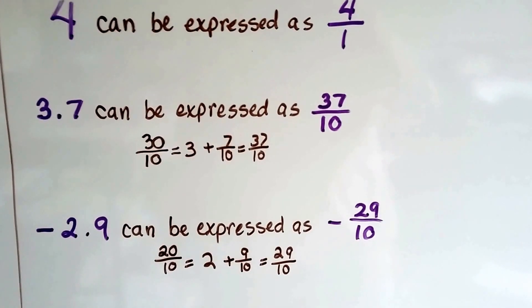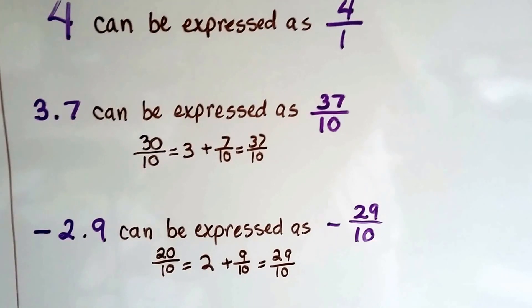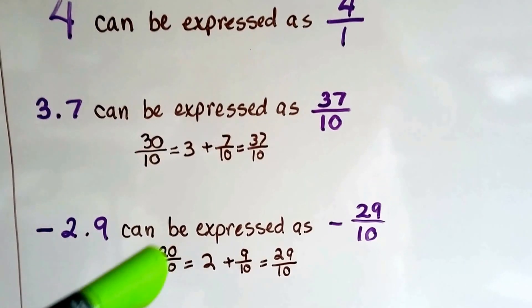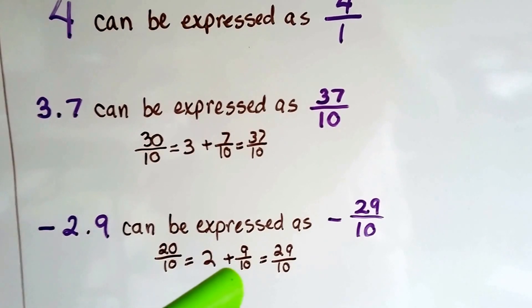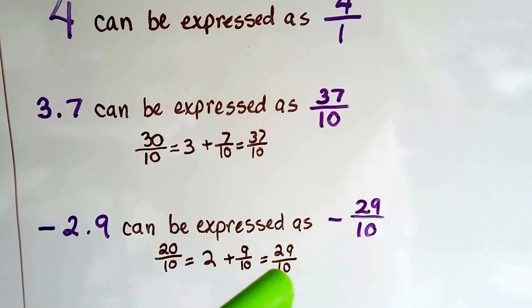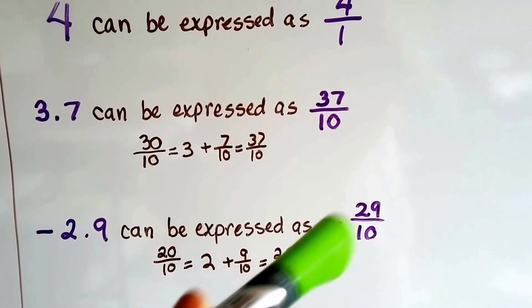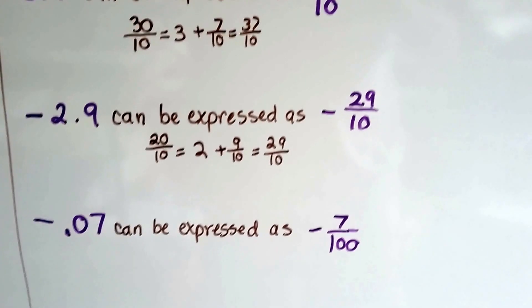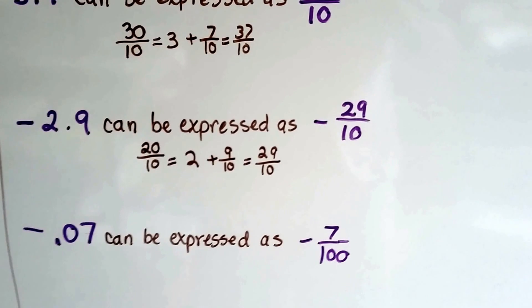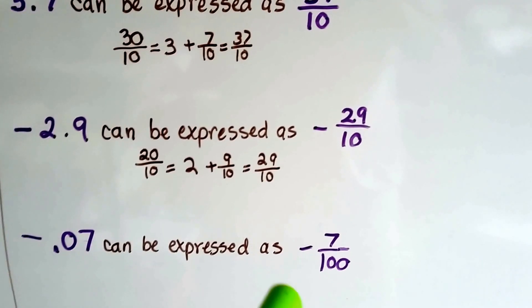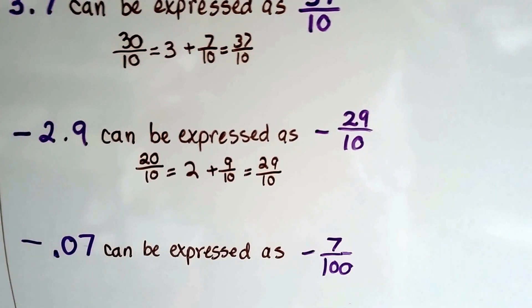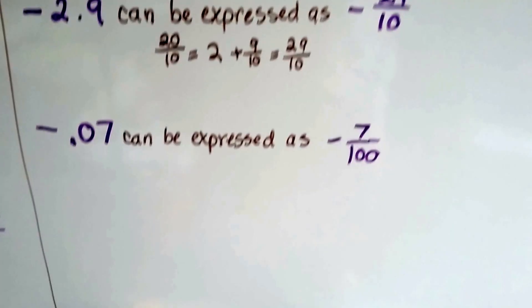Negative 2.9 can be expressed as negative 29 tenths. 20 over 10 is the 2, and 9 tenths. So we get 29 tenths, and it's negative because of the negative sign. Negative 7 hundredths can be expressed as the negative sign in front of 7 over 100.